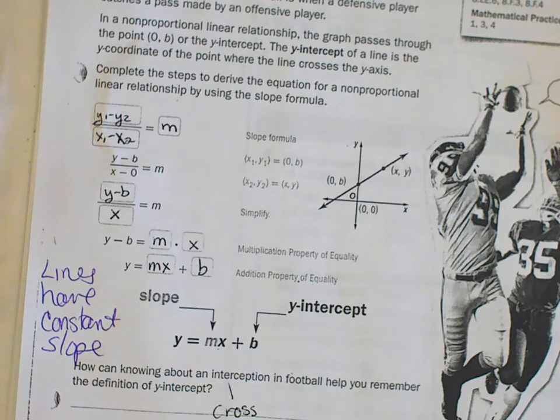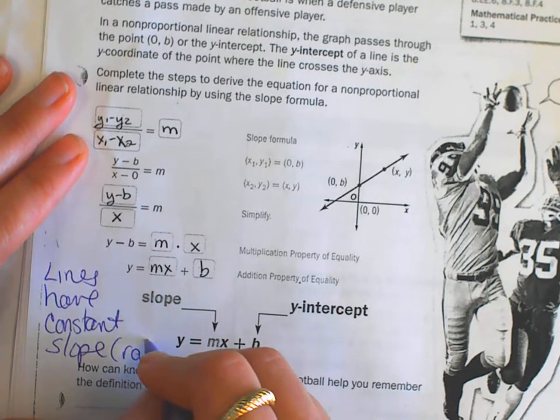Something is a line if it has constant slope. Lines have constant slope. If the slope changes, it wouldn't be a line anymore. It would be some kind of curve. So constant rate of change, constant slope.